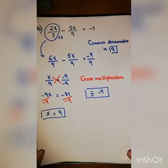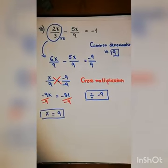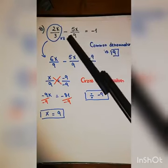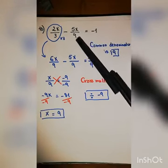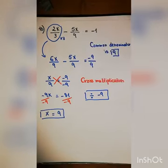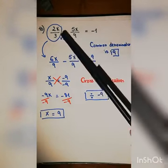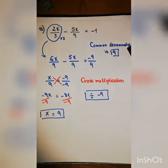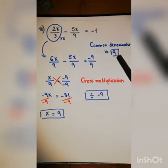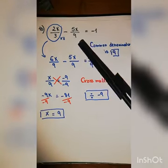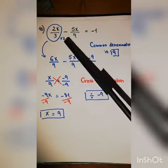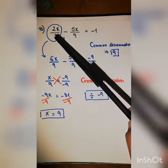Moving to exercise number ten: we have two x over three minus five x over nine equals negative one. The denominators are three and nine, so the common denominator for both will be nine. Only the first fraction needs to be fixed.